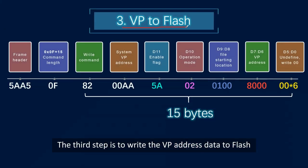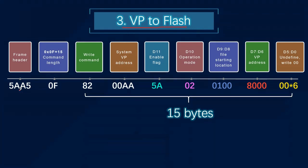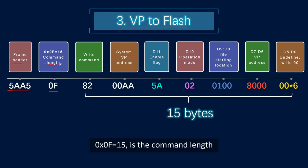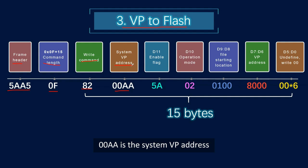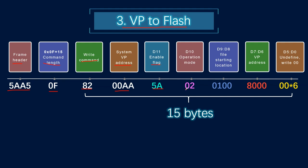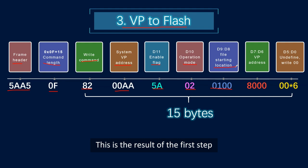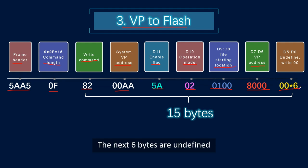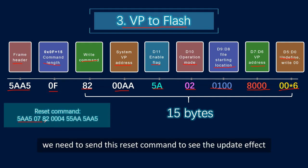The third step is to write the VP address data to Flash. Look at this command: 5AA5 is the frame header, 0x0F (15) is the command length, 82 means writing command, 00AA is the system VP address for writing to Flash, 5A is the enable flag, 02 is the operation mode, 0100 is the 32.ICL file starting location (result from step 1), 8000 is the VP address from step 2, and the next 6 bytes are undefined — write 00. Finally, we need to send the reset command to see the update effect.